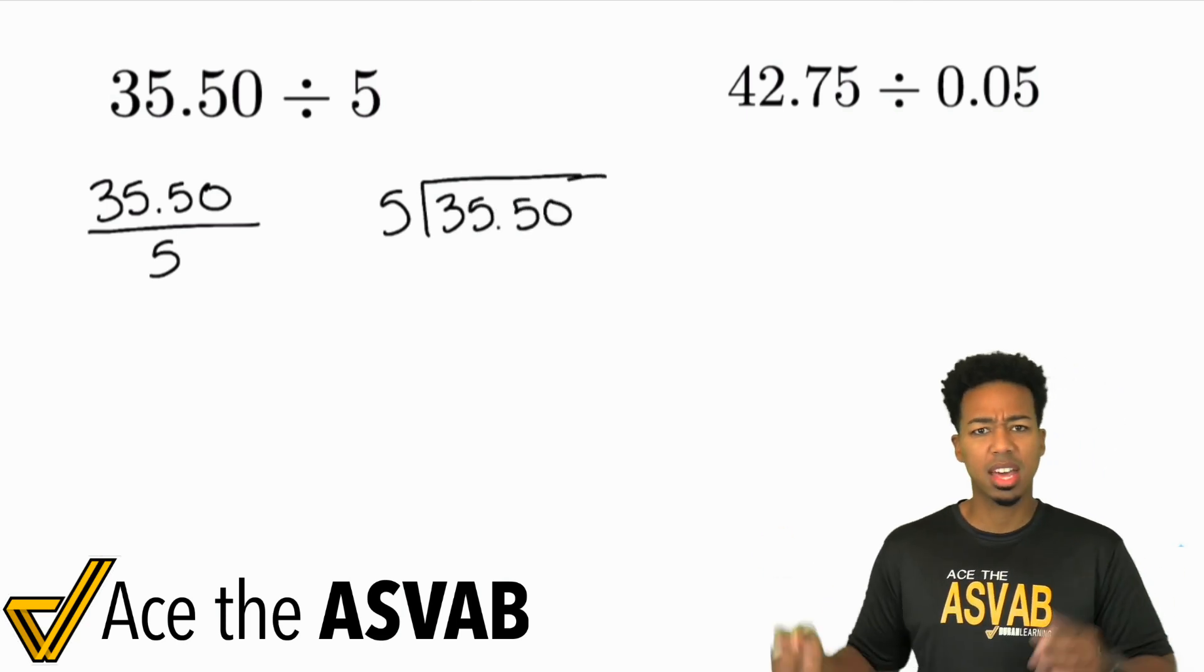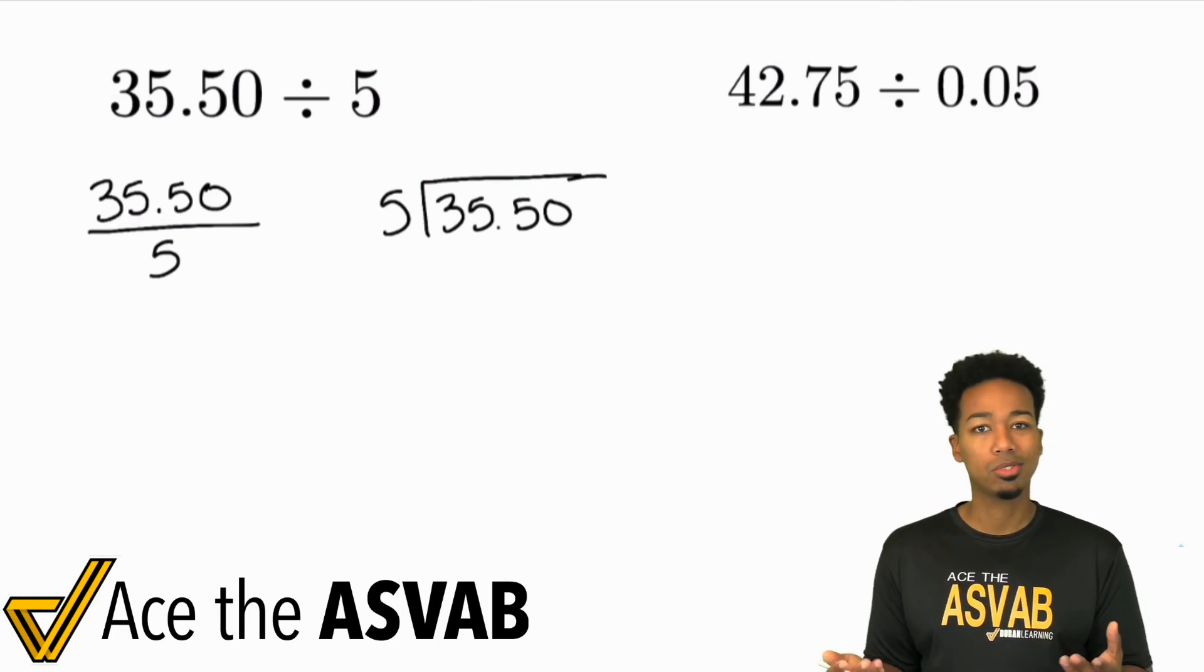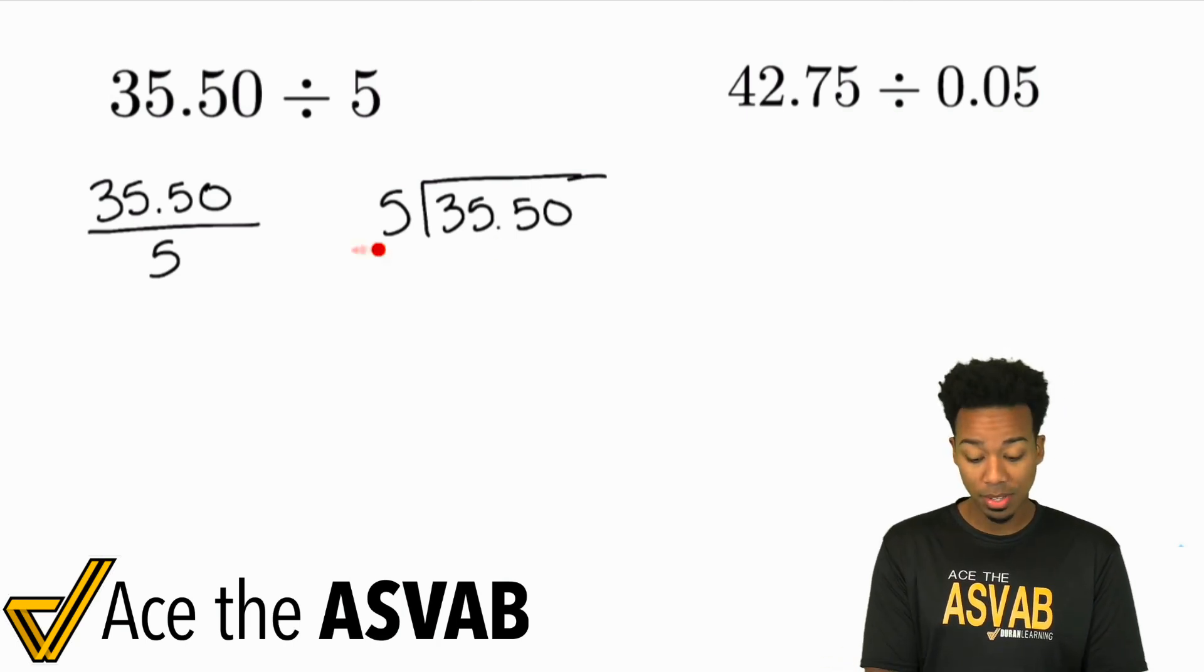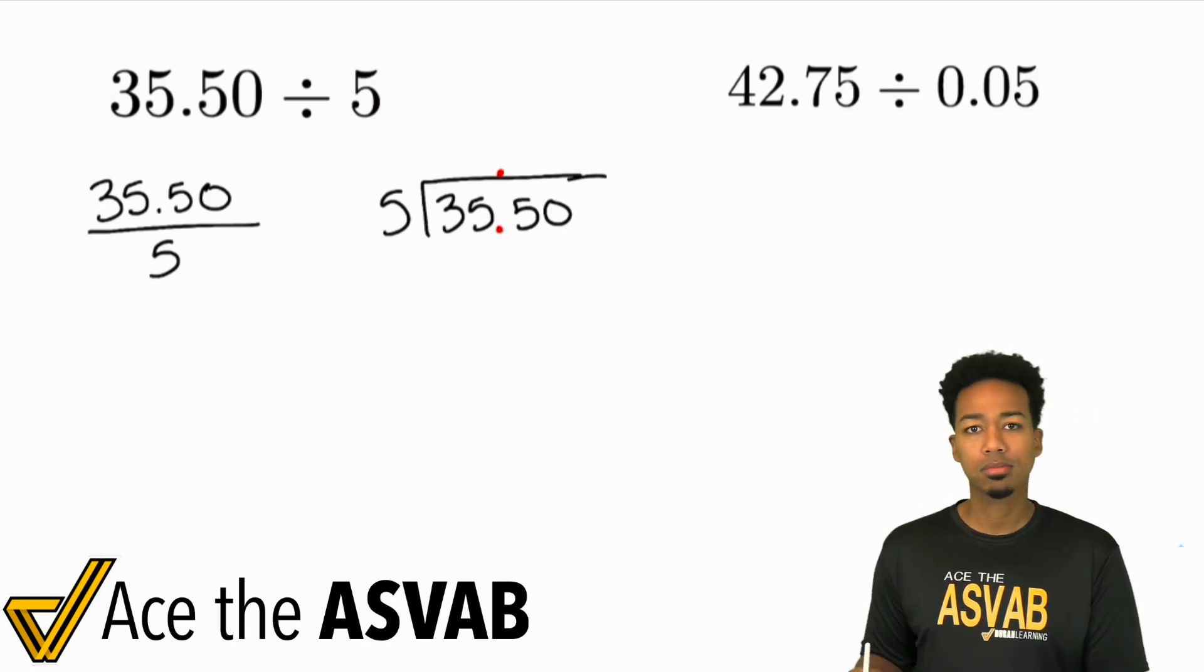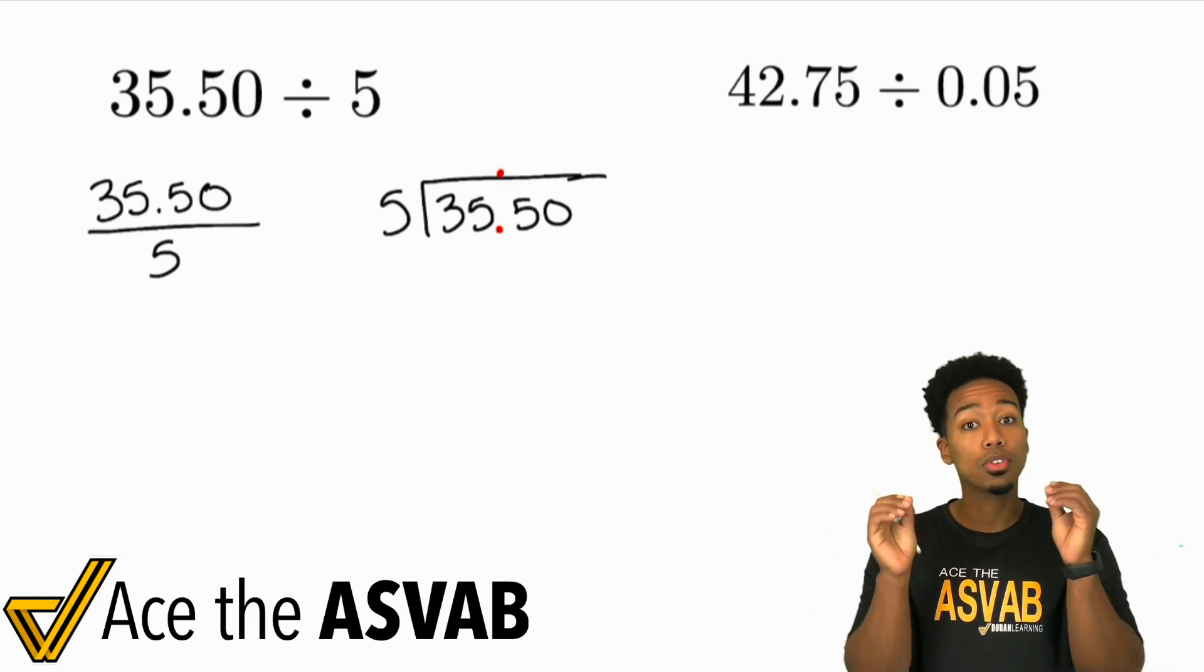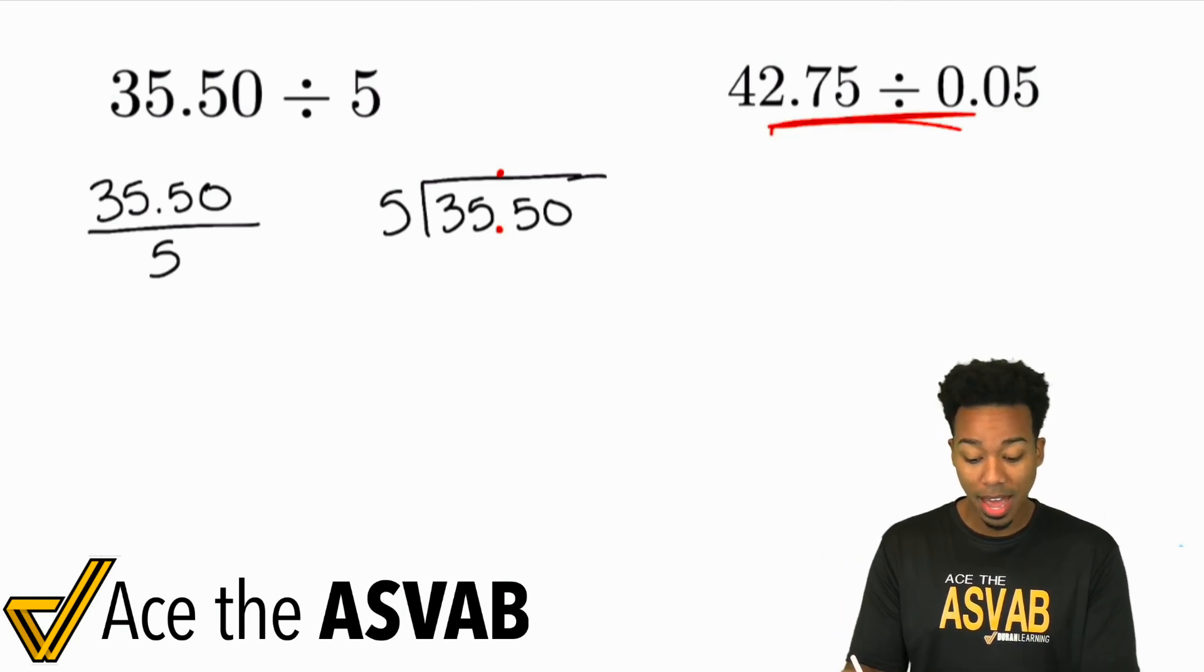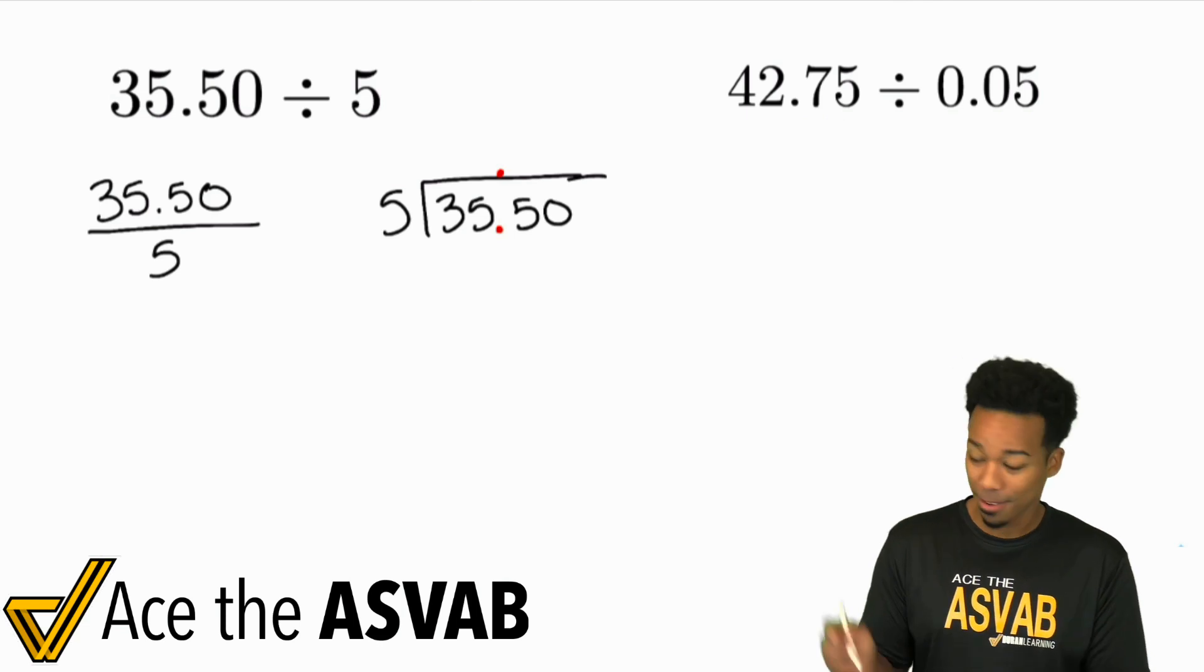Because when the numerator is the only one with the decimal, you're good. This decimal right here, you really don't have to worry about it. Because if you don't have a decimal that's being divided by, you're good. You can just go ahead and place the decimal exactly where it was and divide as normal. That's it. If it's only the numerator that has a decimal, you're good. If the denominator is the one that has a decimal, that's the one we're going to take care of in one moment. But let's go ahead and take care of this one first.